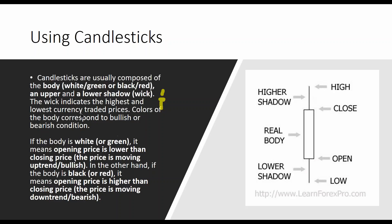When we draw a candlestick, each one also gives you a lot of information. At the open, we draw a line; at the close, we draw a line. We put a dot for the high and a dot for the low, and connect these to the open and close. If we step up from the open to the close, that's a bullish signal — we color it green. If we step down from the open to the close, that's bearish — we color it red. So we have open, high, low, and close. It's really just a bar with a color drawn in the center.